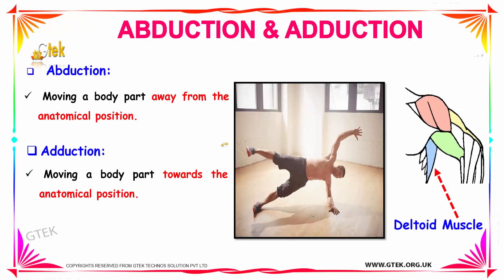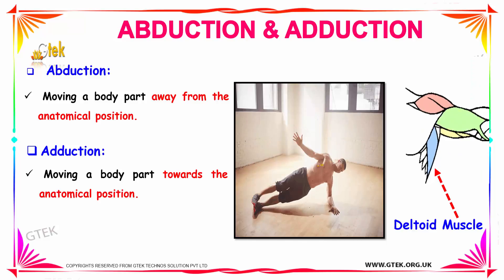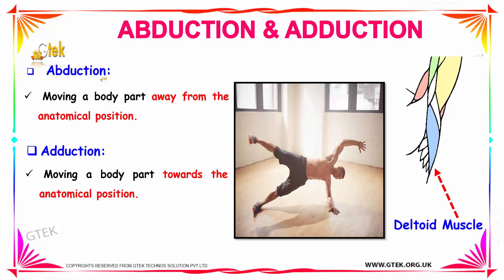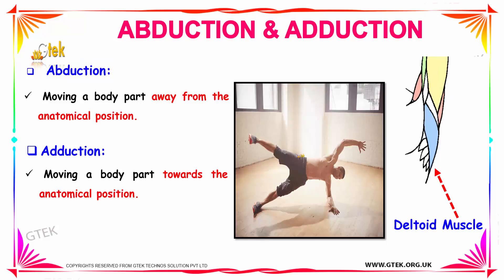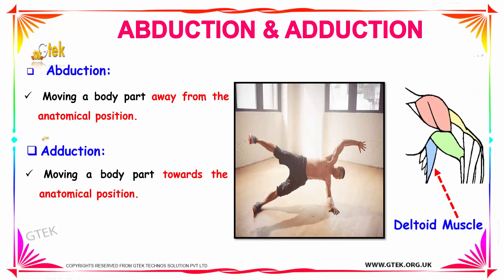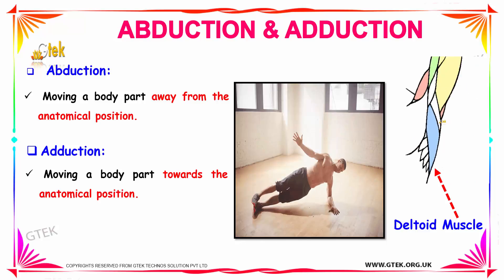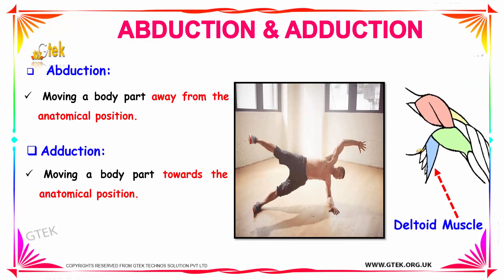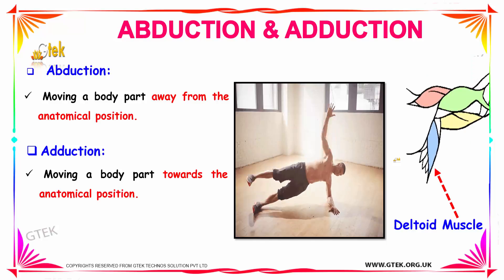Our next movement is abduction and adduction. If you move a body part away from the anatomical position then it is known as abduction. If you move a body part towards the anatomical position then it is known as adduction. The movement is done by your deltoid muscle, which is located in your shoulder region. That is what is meant by abduction and adduction.